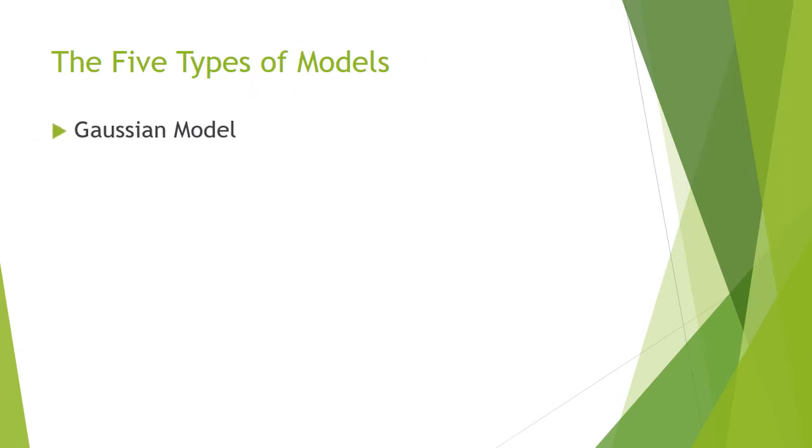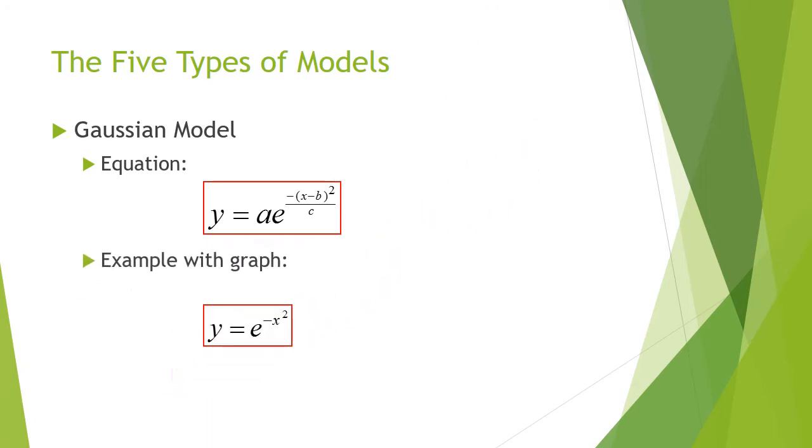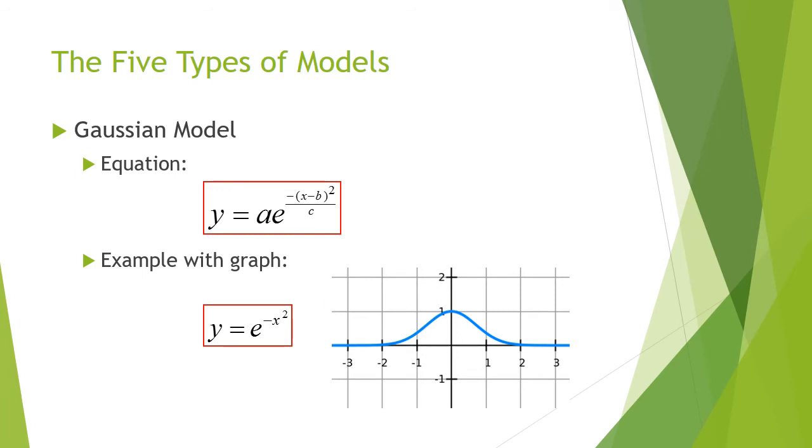We have the Gaussian model. The equation is y equals a times e to the negative x minus b squared over c. Here's a basic example of that, y equals e to the negative x squared, and it looks something like this. Notice that we have a horizontal asymptote at y equals zero.